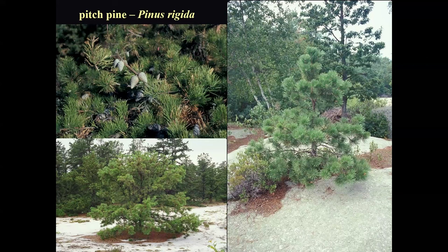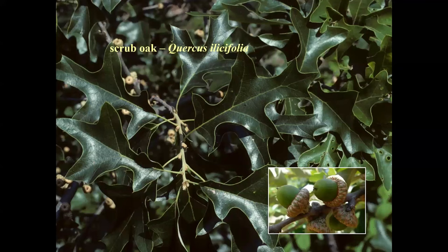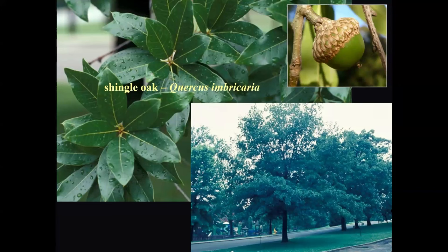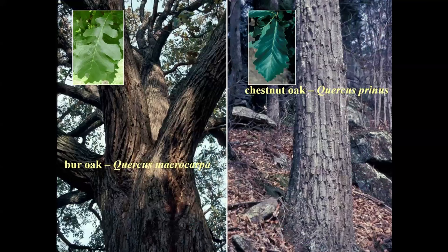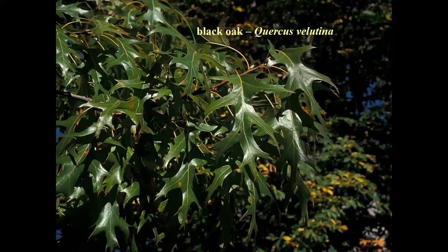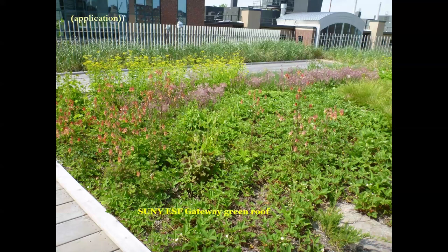Pitch pine — growing on raw quartzite sand of the New Jersey Pine Barrens, out of a rock on Sebago Lake in Maine. This is one tough tree. Scrub oak — only about 12 feet high, leaves look like a miniature black oak, seen over in the Albany Pine Bush. Shingle oak — a red oak I grew up with in Northern Kentucky, with a single bristle tip, very drought tolerant, perfectly hardy here and all over the cemetery and campus. Black oak, chestnut oak, and bur oak — all really drought tolerant. For the Gateway Green Roof planted in 2012, we selected the most drought-tolerant trees, shrubs, and herbaceous species.